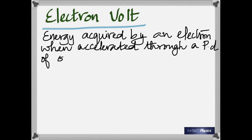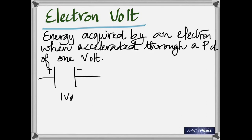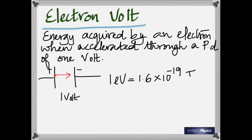The electron volt is the energy that an electron acquires when accelerated through a potential difference of one volt. Imagine two plates — one positive, one negative — with a potential difference of one volt, and you move an electron from the positive plate to the negative plate. One electron volt equals 1.6 × 10⁻¹⁹ joules. Whenever you do problems, you must convert electron volts into joules.